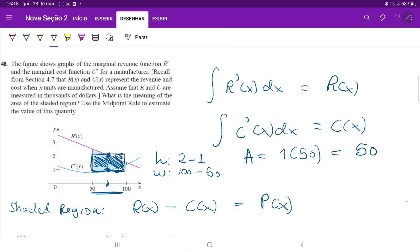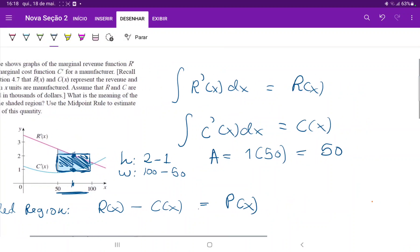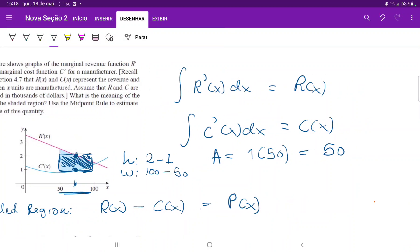And 50 is because R and C are measured in thousands of dollars. So we can say that the area is $50,000, which is the difference between the revenue and the cost. So we can say that the profit is equal to $50,000.